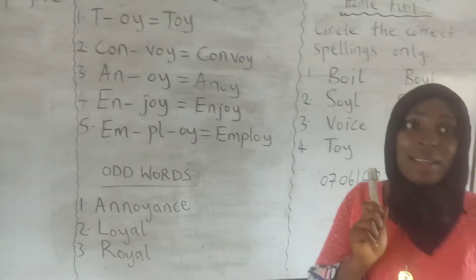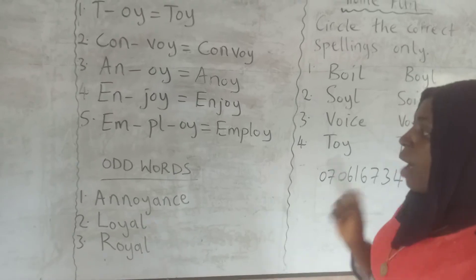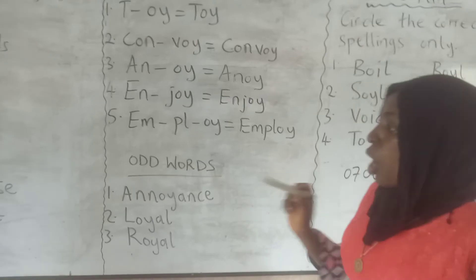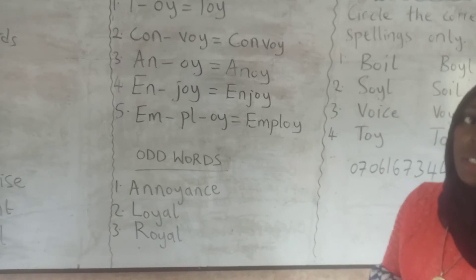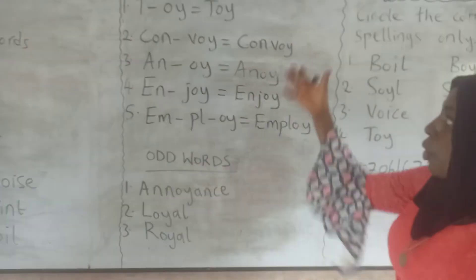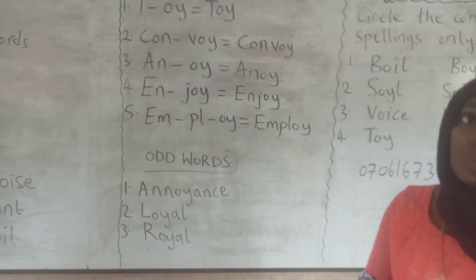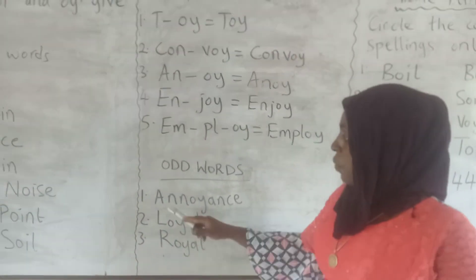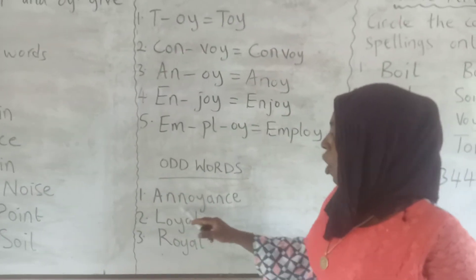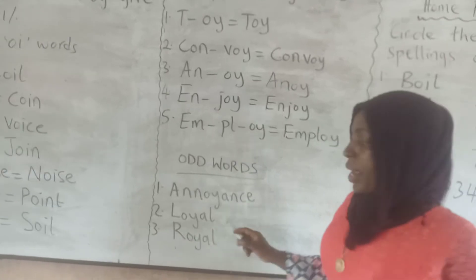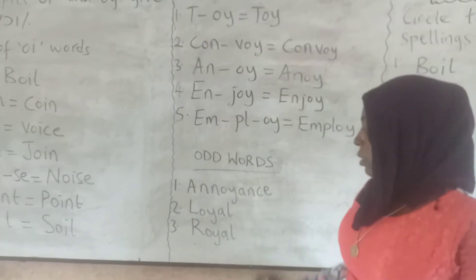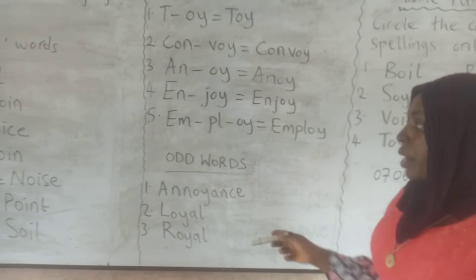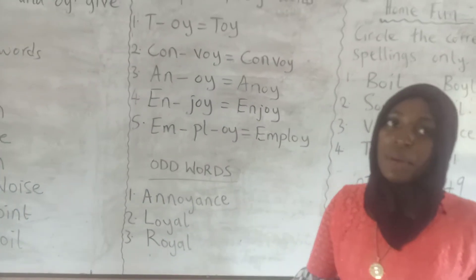However, there are some odd words — meaning they are not obeying these rules, but there are not many. We have annoyance, loyal, and royal. These are the three odd words with O-Y in the middle.